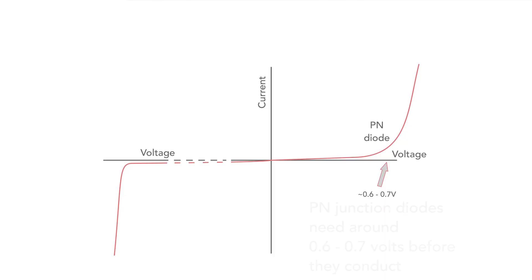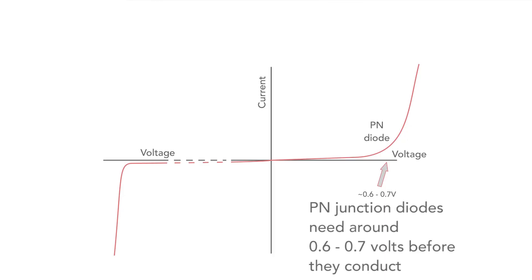Traditional diodes have some major drawbacks. One of them is speed, and this can be a real issue for things like RF applications or high-speed switching, where speed is crucial. Another issue with traditional diodes is the relatively large forward voltage drop, and this means that for power applications, a relatively large amount of heat is dissipated, which may have to be removed, making equipment bigger and more expensive.